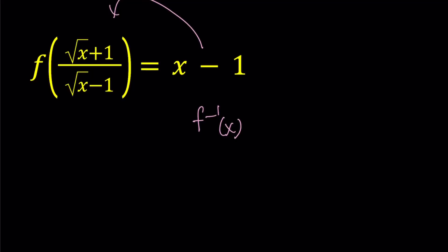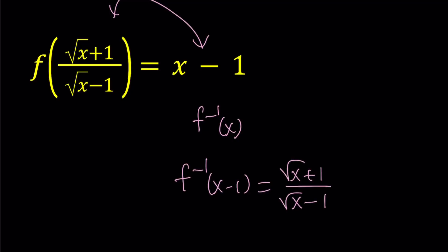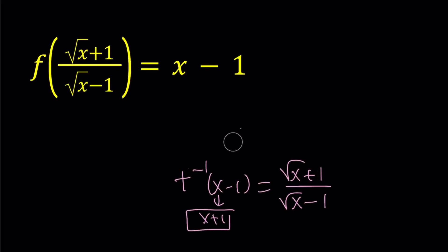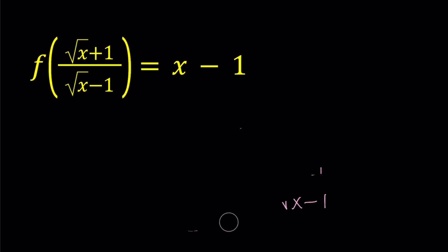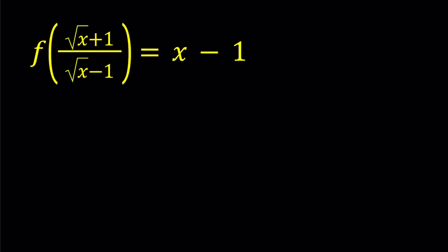All you have to do is switch these around. You're going to get something like f inverse of x minus 1 equals square root of x plus 1 divided by square root of x minus 1. And then just replace x with x plus 1, and you're done. That is going to be the answer — fairly easy, right? That's not what we're trying to do, but I just wanted to mention it because that question could come up, and doing it the longer way is just going to be time consuming.